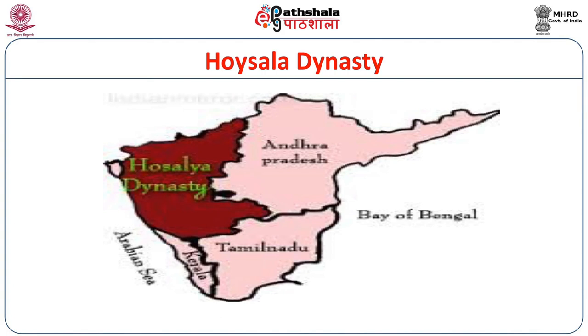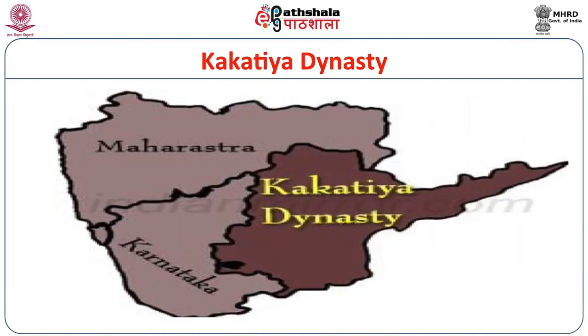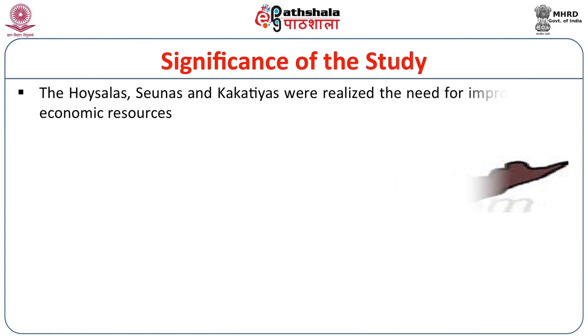These are the maps which show the Hoysala territories as well as the Yadavas of Devagiri territories of the South Indian dynasty. This map shows the Kakathia kingdom and their boundary line between the South Indian dynasties. The significance of the present study follows.